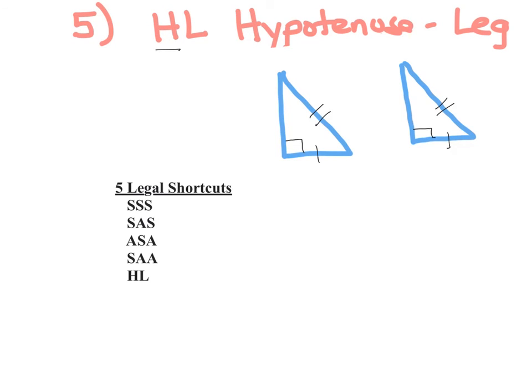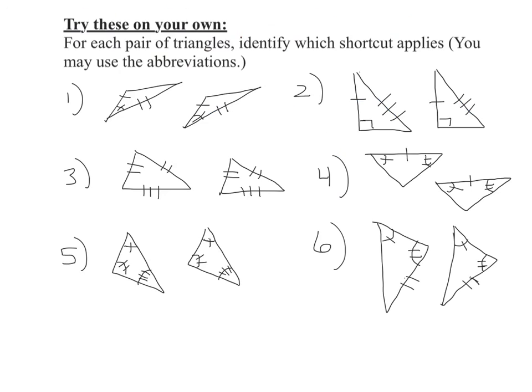To summarize, these are the five legal shortcuts, the only five that exist for showing two triangles are congruent: side-side-side, side-angle-side, angle-side-angle, side-angle-angle, and hypotenuse leg. Finally, here are six problems for you to try on your own. I hope this screencast was helpful.